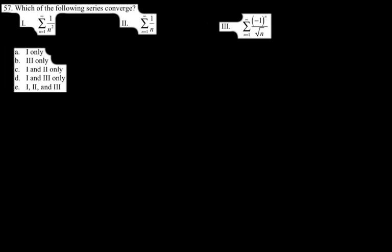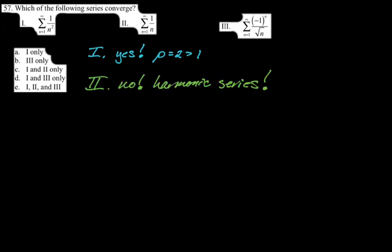Which of the following series converge? So this is a good one. They're basically p series, except the last one is alternating. So we'll have to think about that. So the first option, number one, is a p series with p equals two. So that's going to converge because two is greater than one. And then for option two, that is the harmonic series. Famously, it's divergent. So I'm going to write no because it's the harmonic series. But you might also say it's a p series where p equals one because one is not greater than one.